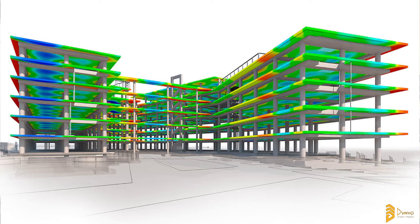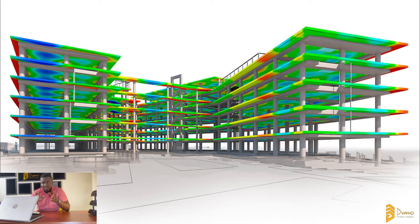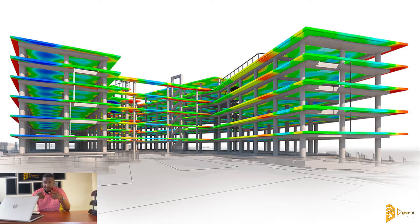After looking at all these loads that are going to be applied to the building during its lifetime, we come up with a set of calculations and determine what the size of the columns is going to be, what the steel reinforcement bars are going to be, their sizes and arrangements, the stirrups, the grade of concrete to be used, and also the mix ratios to achieve that strength of concrete. Basically, it's a lot of physics and mathematics.